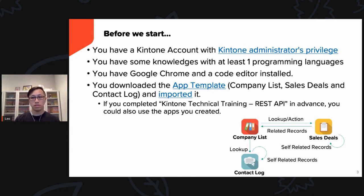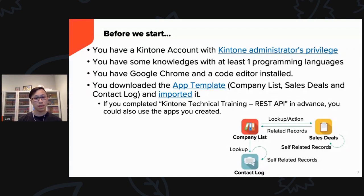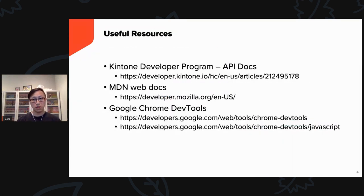Before we start, there are several items you will need. First, you'll need a Kintone account with administrator access. Second, you need some understanding of at least one programming language — in this tutorial we will work with JavaScript. Third, you need Google Chrome and a code editor installed; we'll be using VS Code, but you can use another editor. Lastly, download the app template and import it into your Kintone platform. You can find the GitHub links below for the app template and the PDF of this presentation.